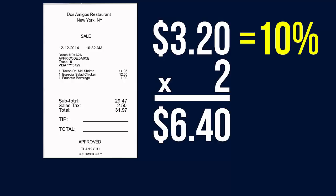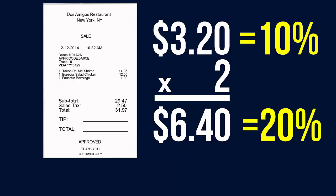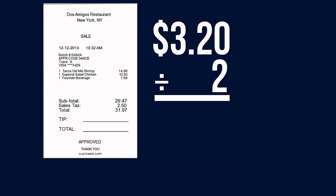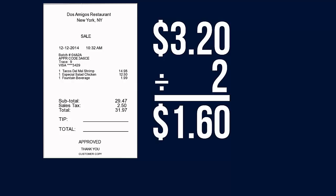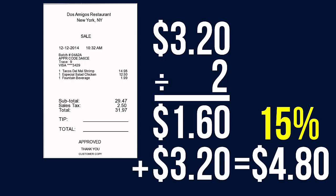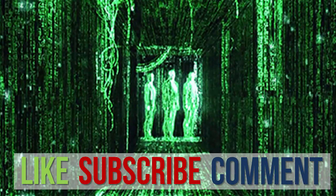To get fifteen percent — our standard tip in the US — what we do is divide that ten percent value by two. We get a dollar sixty, then add that dollar sixty to the original three twenty, and you get four eighty. That's fifteen percent of our bill.